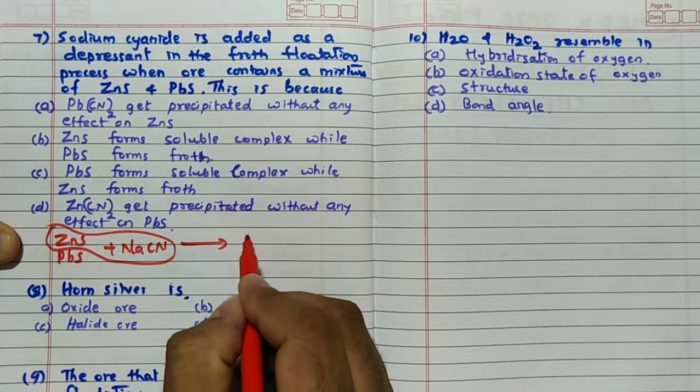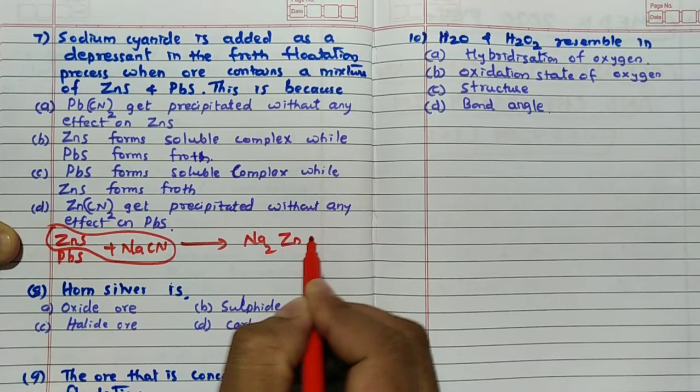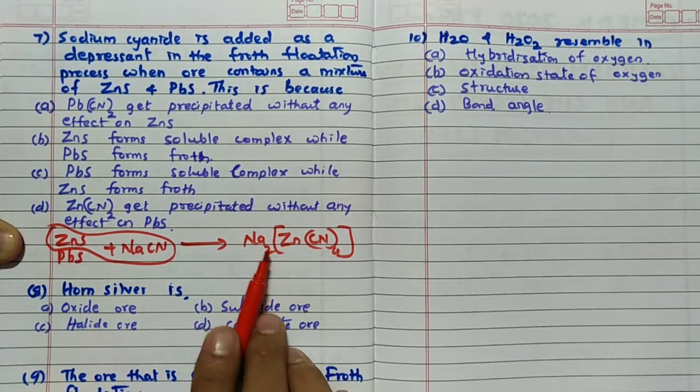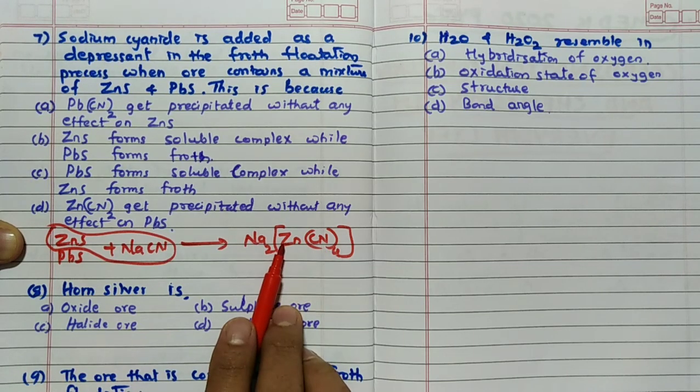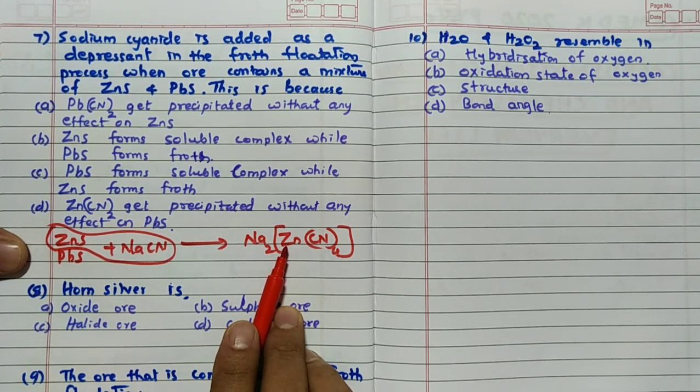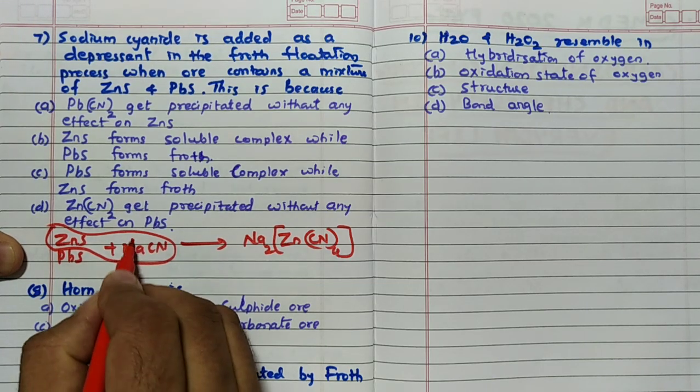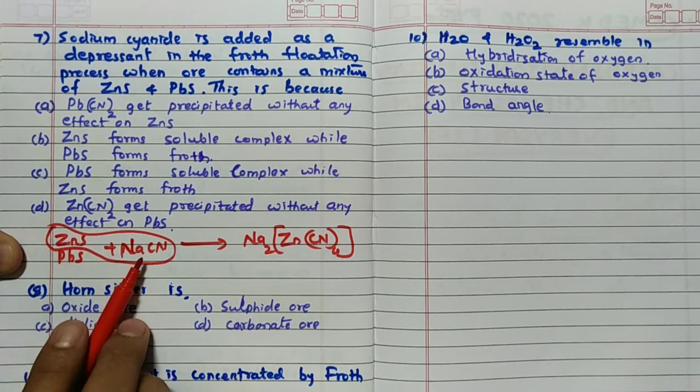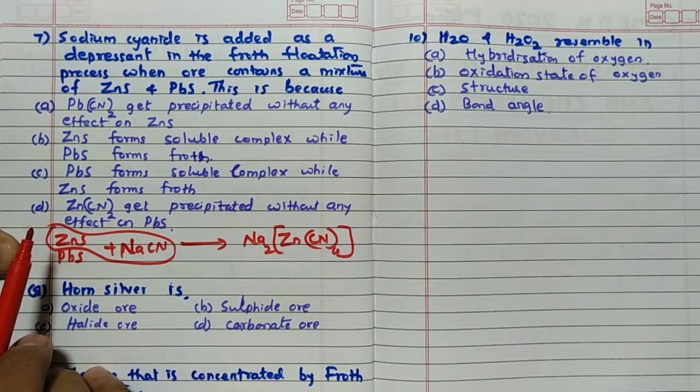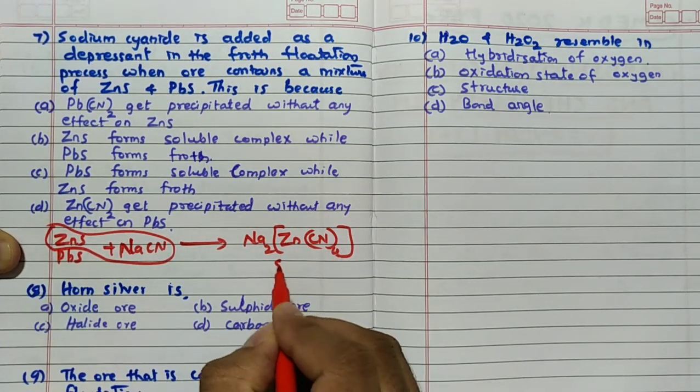Forming remember, Na2[Zn(CN)4] complex. Sodium tetracyanozincate complex is going to form. Because of that reason, always remember this particular point is that ZnS and NaCN always form this particular complex. So in this case, hence the answer for this question is, this is water soluble.